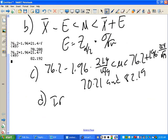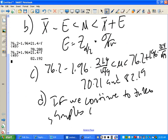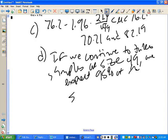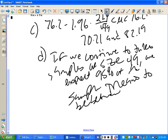If we continue to take samples of size 49, we expect 95% of the sample means to be between 70.21 and 82.19. No, it's not chicken scratch. It's clearly legible.